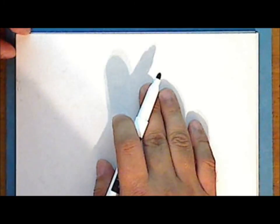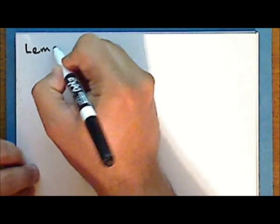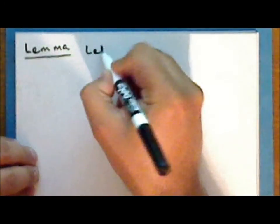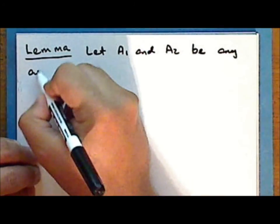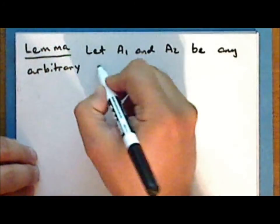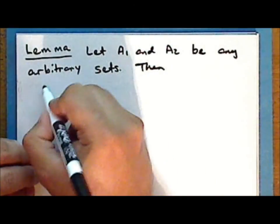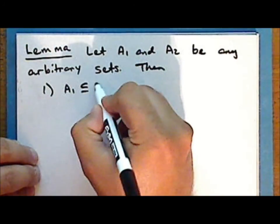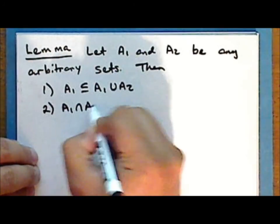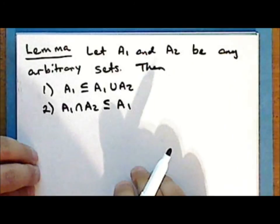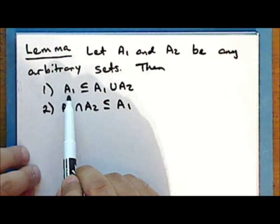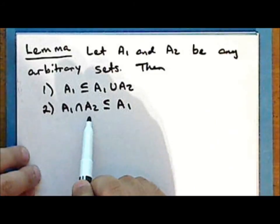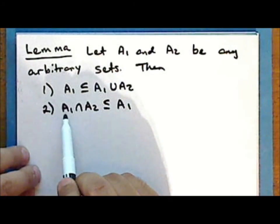We'll start with the exercises from the previous lecture, and the first two we will prove as a lemma. Let A₁ and A₂ be any arbitrary sets. Then A₁ is a subset of the union of A₁ with A₂, and the intersection of A₁ with A₂ is a subset of A₁. What we are actually proving is that any set is a subset of any union which contains it, and any intersection is a subset of any of the sets in the intersection.